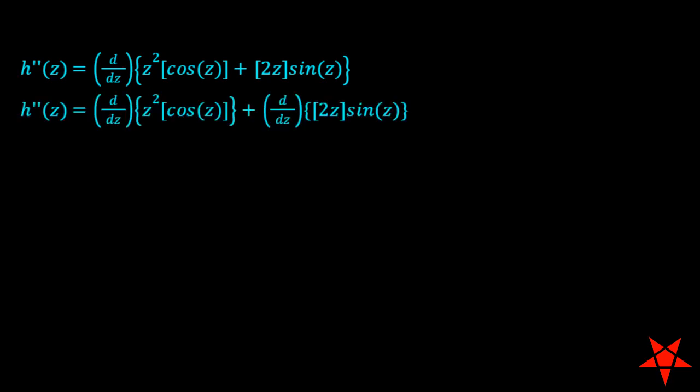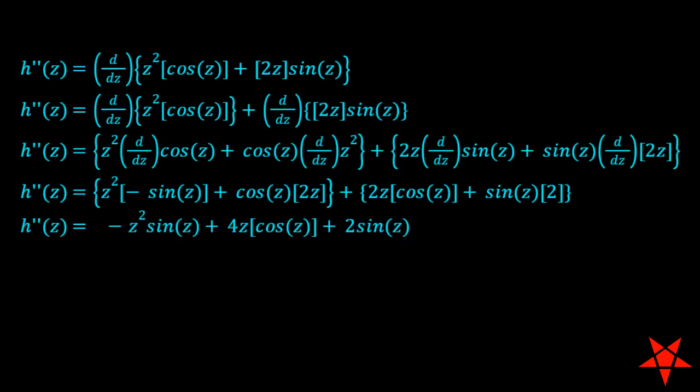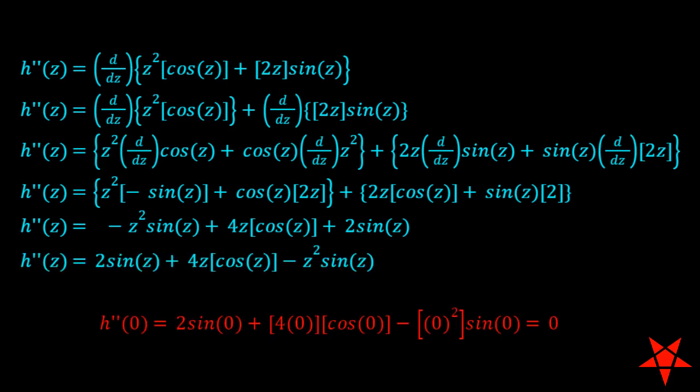The second derivative is a little more time consuming for h of z, but we brew some more coffee, keep track of a growing set of terms, and find that h double prime of 0 also equals 0.